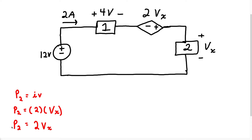This is our answer for the first problem. We don't know whether it is absorbed or delivered, because we don't know what Vx is. If Vx is a positive number, then this would be a positive power, which means that this element is absorbing power. But if Vx turns out to be a negative number, then this power is going to be negative, which means it is delivering power. Let's solve the power in each one of these elements.